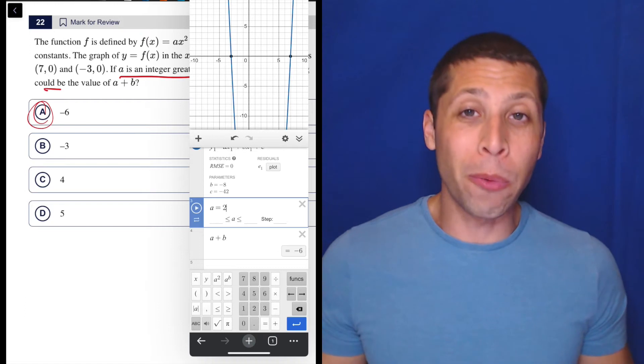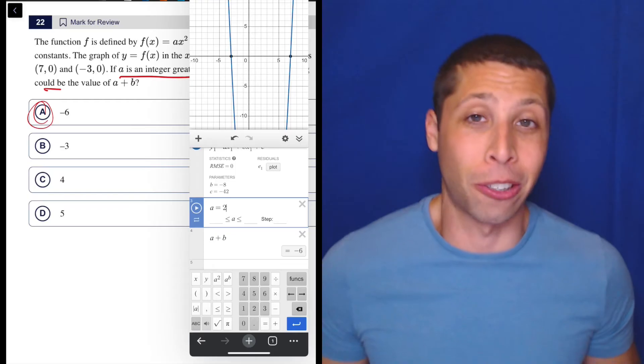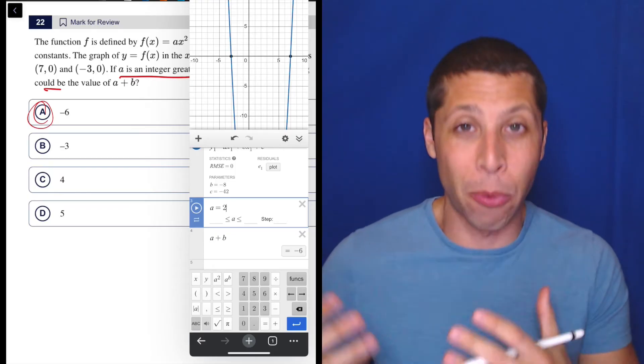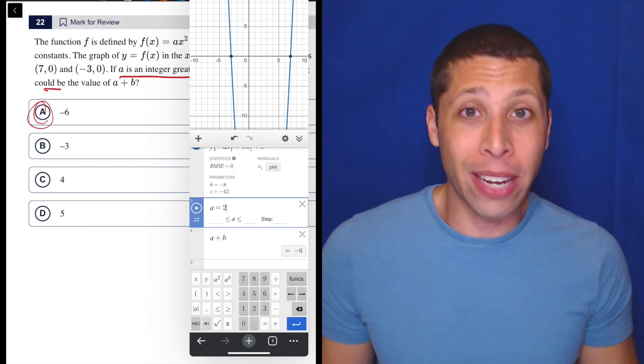And of course, you know, there's a point where we wouldn't keep trying integers until we found it, right? Like if the answer was like 17 or something, would we really count all the way up to that? Probably not. We'd really want to have the more rigorous way of solving it. But yeah, sometimes stuff just works out nicely.